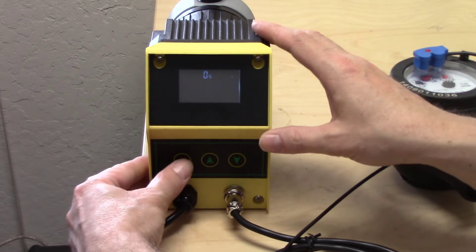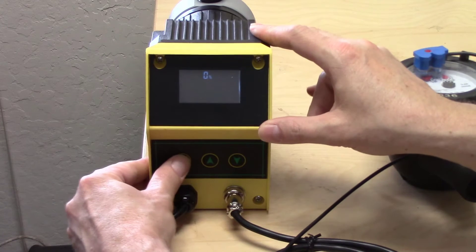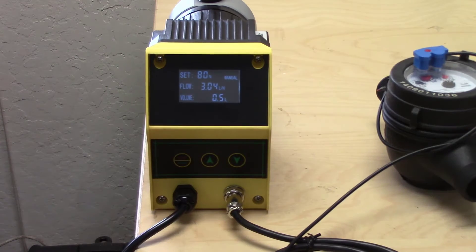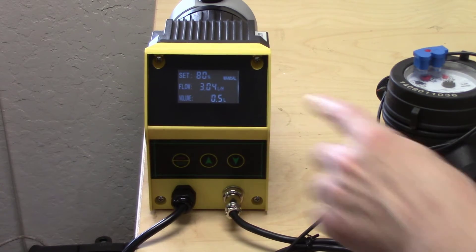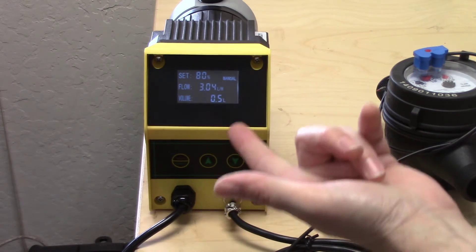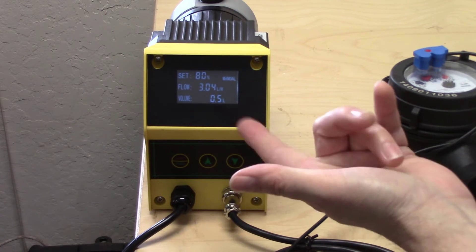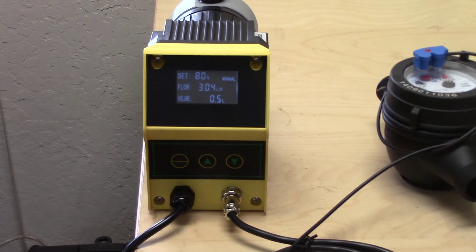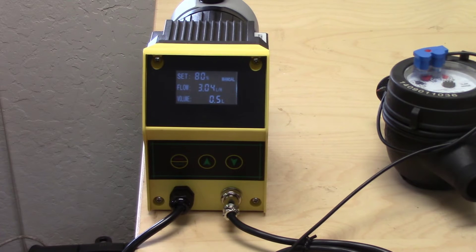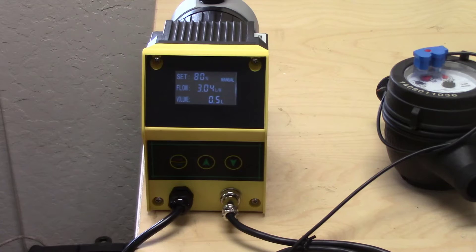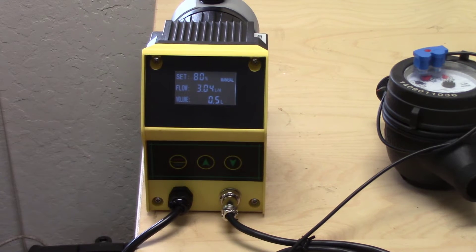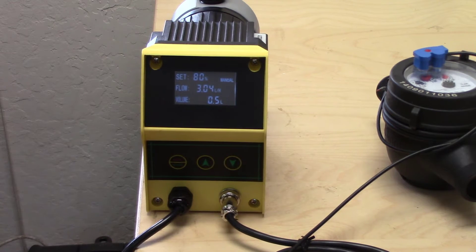When you press and release the start stop button, it will go into whatever mode it was programmed in last. Right now it's in manual, which is why you can hear it pump. You'll leave it in manual mode or change it to manual mode in order to prime the pump, and then after the pump is primed, you'll go back and set it to the pulse setting.